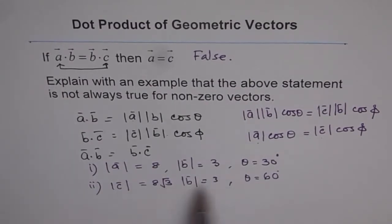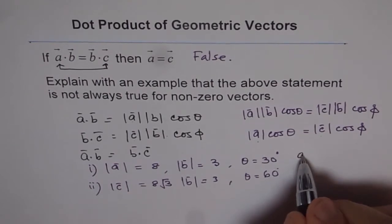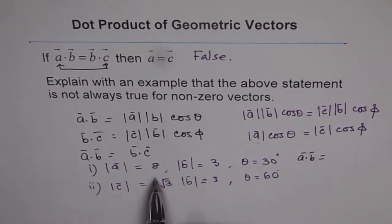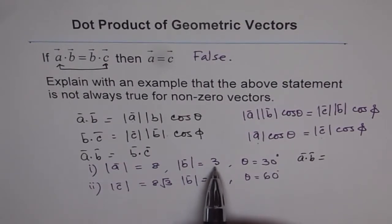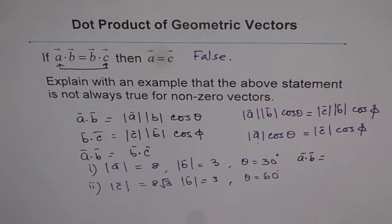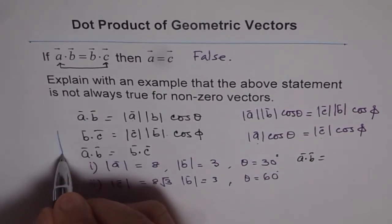Now if you find A dot B, then what will you get? So in the first case, A dot B will be equal to, if you calculate 8 times 3 is 24, and cos of 30 degrees. Well, let's make a triangle and then see for ourselves, what should it be.